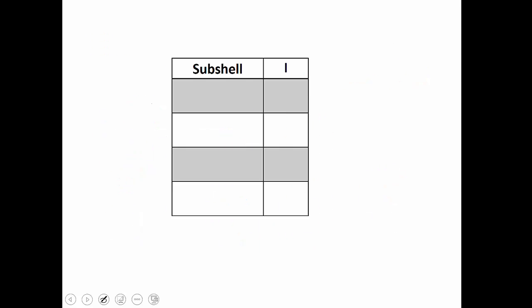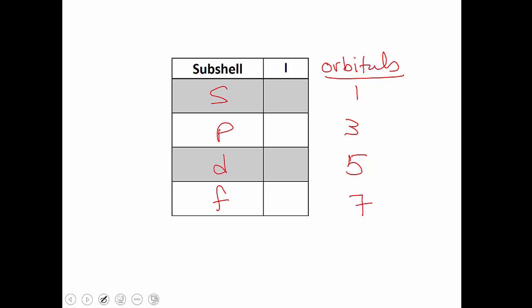Let's summarize our subshells. We have S, P, D, and F. S has one orbital, P has three, D has five, and F has seven. You need to know that, and the L quantum number value that corresponds to each: L equals zero is S, L equals one is P, L equals two is D, and L equals three is F.